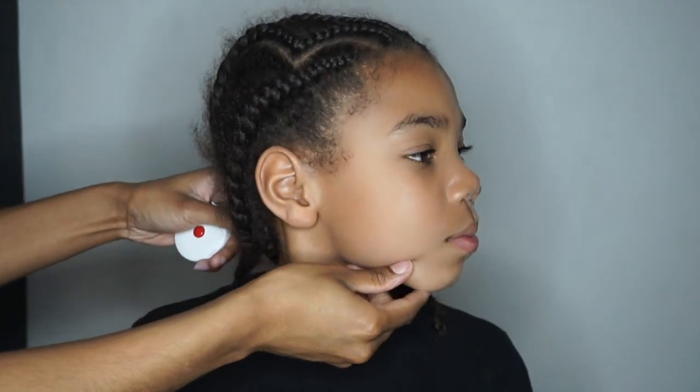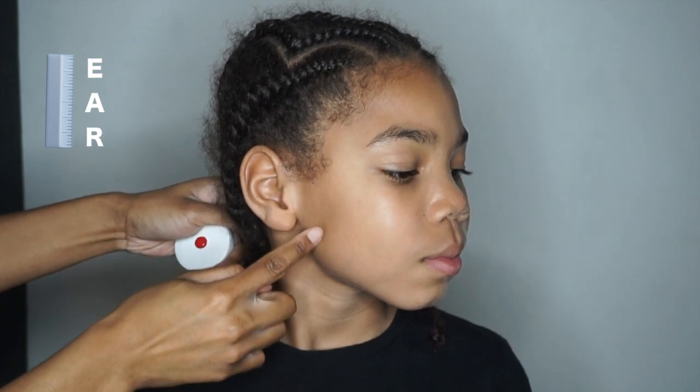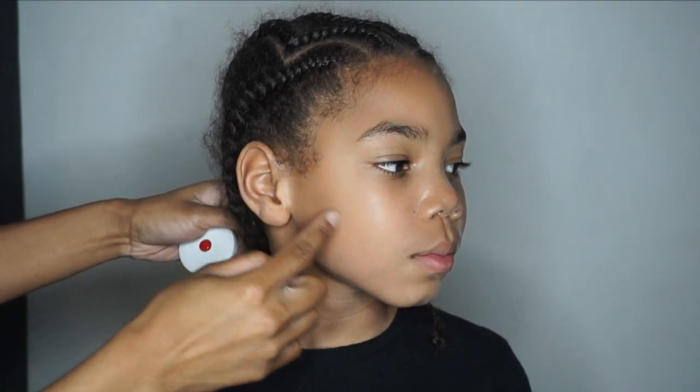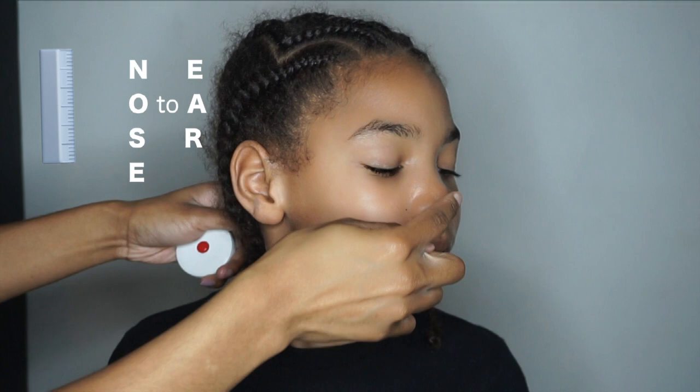First we're going to start with the measurements you need. You're going to need your nose to chin measurement, then your ear or sideburns measurement, and the next measurement you're going to need is from your nose to your ear.